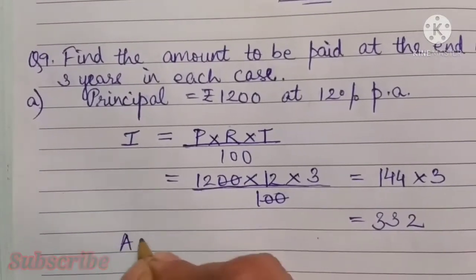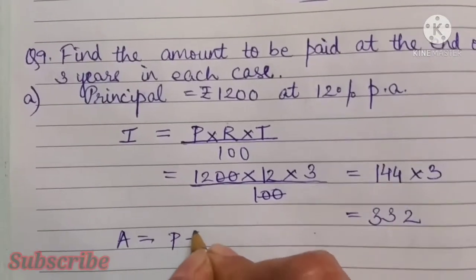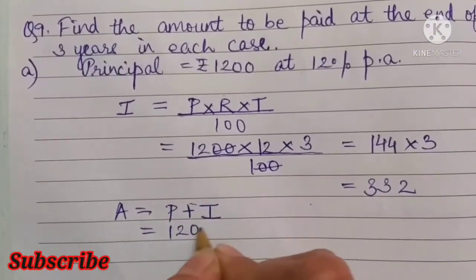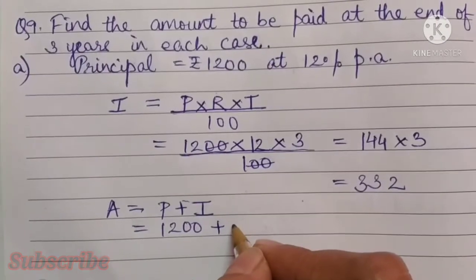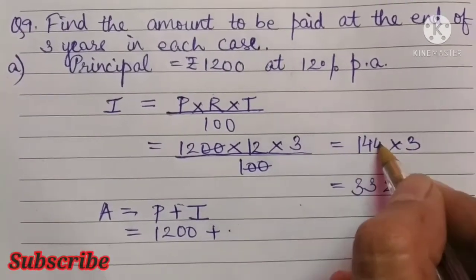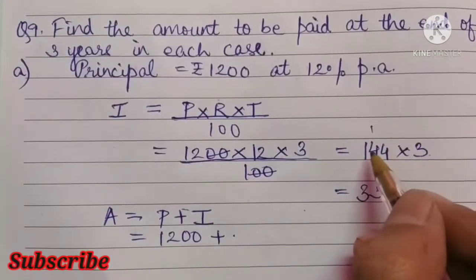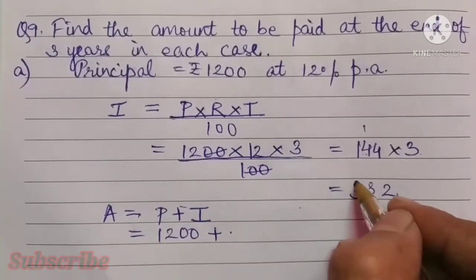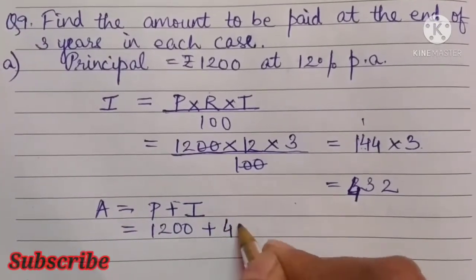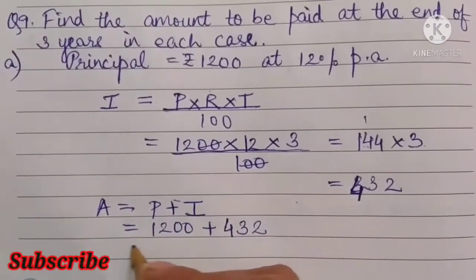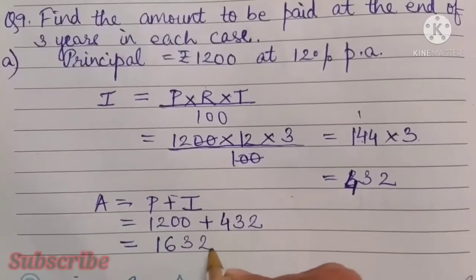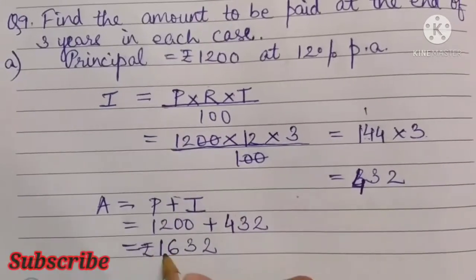12 into 12 is 144, into 3. Now amount is equal to principal plus interest. Calculating 144 into 3 gives 432. So interest is 432. Amount is equal to 1200 plus 432, which is 1632 rupees. This is the amount.